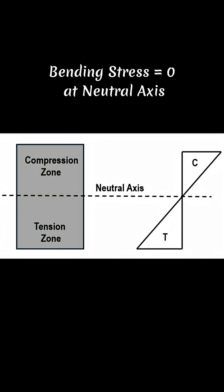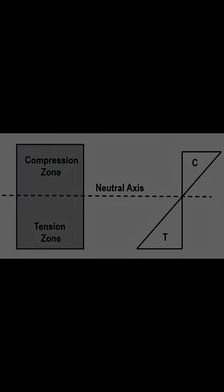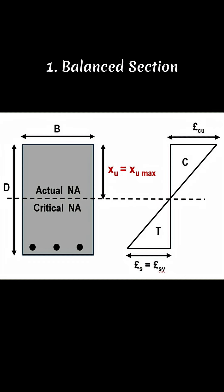Above the neutral axis, concrete takes compression, and below the neutral axis, steel takes the tension. In a balanced section, xu is equal to xu max. Failure occurs by yielding of steel and concrete at the same time.